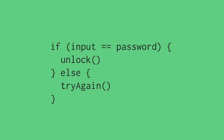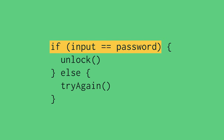But what if the input doesn't equal the password? Then the if statement will evaluate to false, and it will skip over the first set of curly braces and drop down to the else statement, and then execute whatever code is inside its curly braces. So, to summarize: we're saying if the user's input matches the stored password, unlock the phone. Otherwise, tell them to try again. And that's it.